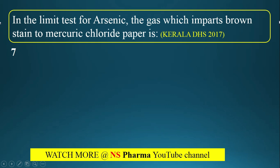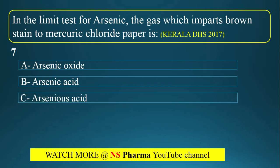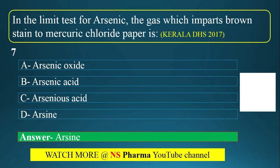Question number 7: In the limit test for arsenic, the gas which imparts a brown stain to mercury chloride paper is? Options are arsenic oxide, arsenic acid, arsenious acid, or arsine. The correct answer is Option D — arsine. This arsenic limit test is based on the Gutzeit test method.